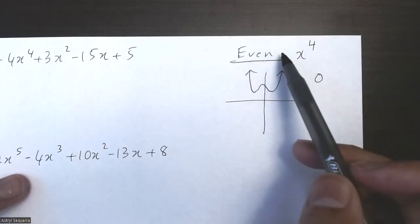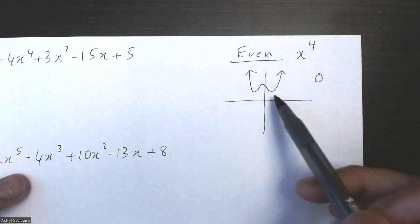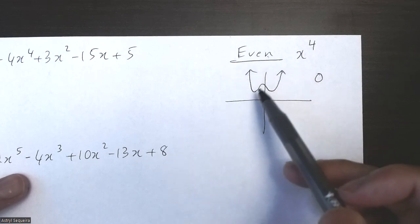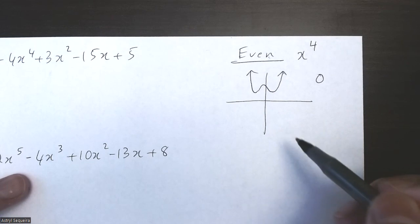So for any even function, doesn't matter what the degree is, as long as it's even, your minimum number of zeros is going to be zero, because it can always turn back before it ever hits the axis. And same with the negative even function.